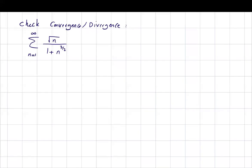We want to check the convergence or divergence of the following series: the summation of square root of n divided by 1 plus n to the power 3 over 2. There are different techniques that you can use. What I'm going to show you is how to use the integral test.